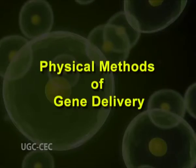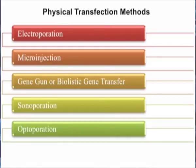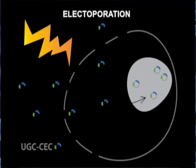Physical methods of gene delivery allow gene delivery directly inside the nucleus and cytoplasm. There are numerous methods such as electroporation, microinjection, gene gun or biolistic gene transfer, sonoporation, and optoporation. Electroporation is a physical method of transfection in which the cells are subjected to an electric impulse, which creates pores in the cell membrane. The cells take up the DNA through these pores.